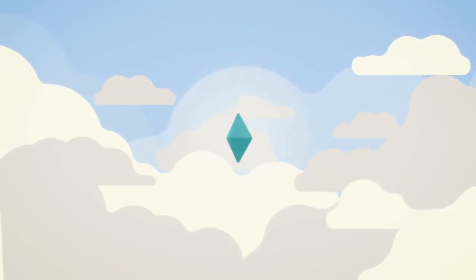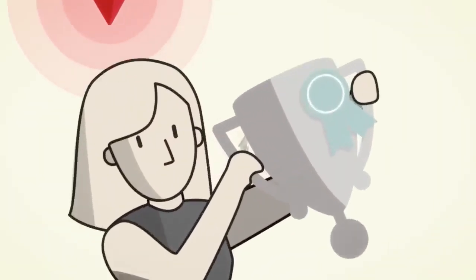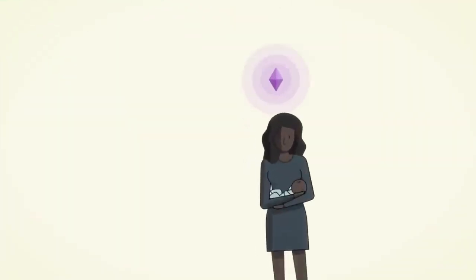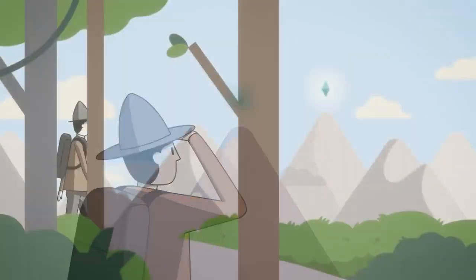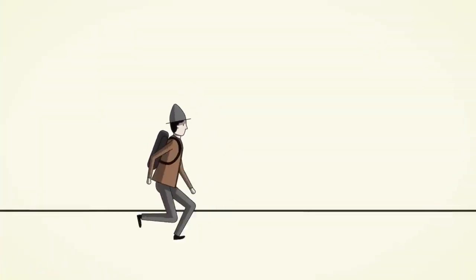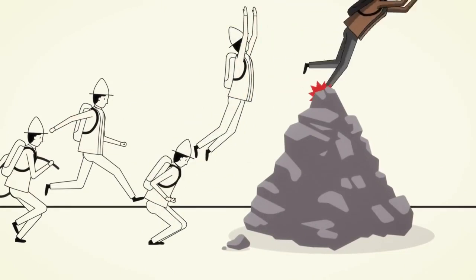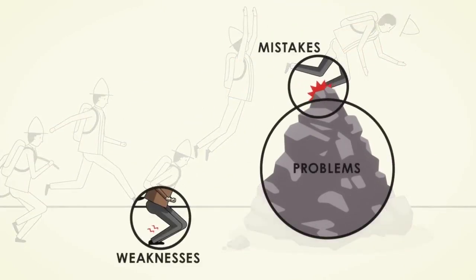But what does a successful life look like? We each have to decide for ourselves what success is. I don't care whether you want to be a master of the universe, or to live under a palm tree, or anything else. I really don't. Each of us chooses goals based on our values and decides on the best path to achieve them. But we all need approaches to making decisions that work well, especially when facing problems, mistakes, and weaknesses that stand in our way.